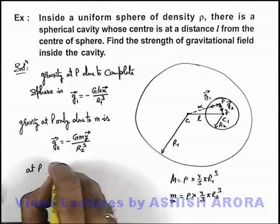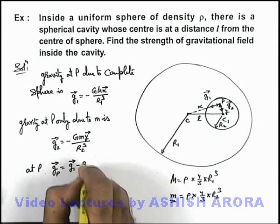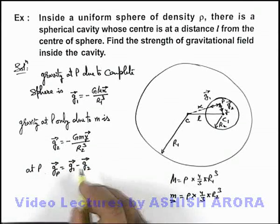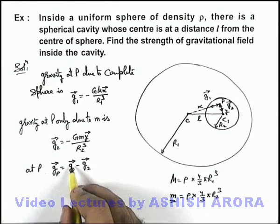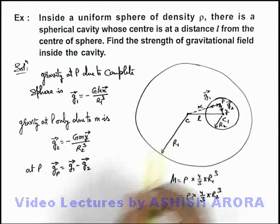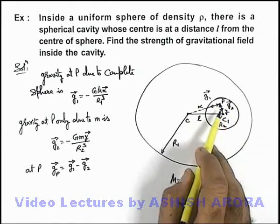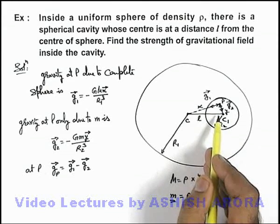Because g₁ is due to the complete sphere and g₂ is only due to the mass which is within the cavity region which is going to be removed, then only cavity will be created.